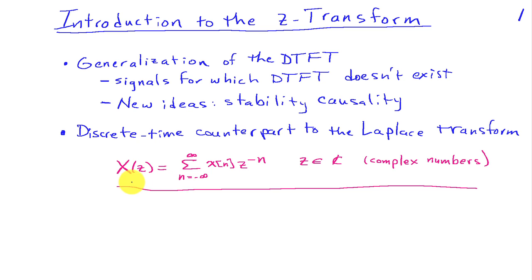We can define the Z-Transform in equation form as X of Z is the sum from N equals minus infinity to infinity of X of N, Z to the minus N. And Z here is a complex number.